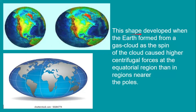This shape developed when the earth formed from a gas cloud, as the spinning of the cloud caused higher centrifugal force at the equatorial region than in the region near the poles. Because of this, the gas cloud caused higher centrifugal force at the equatorial region, and as a result, earth is quite wide at the equator and narrow at the poles.